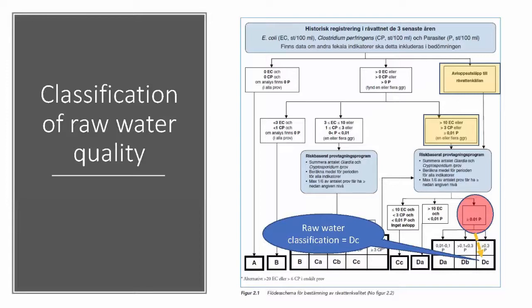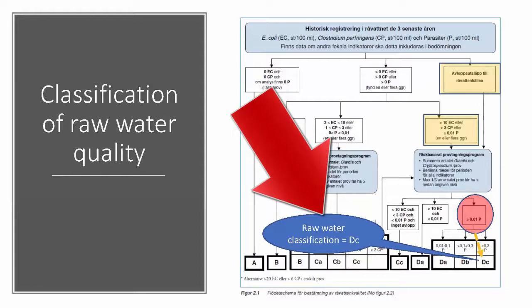Now following this flow sheet down you see that the counts of E. coli is it basically should be below zero and we are now talking about 15,000 in our raw water which is the treated wastewater. So very logically and not very complicated we must assume worst case scenario. So we will end up with what the guideline defines as a raw water classification of DC which you see here.